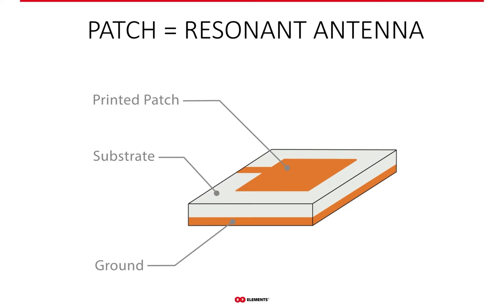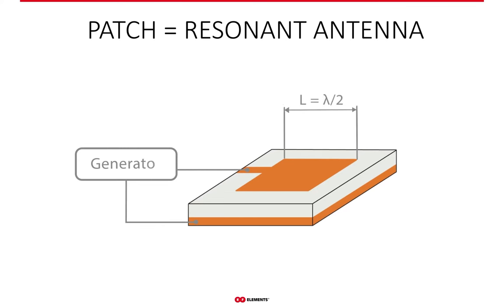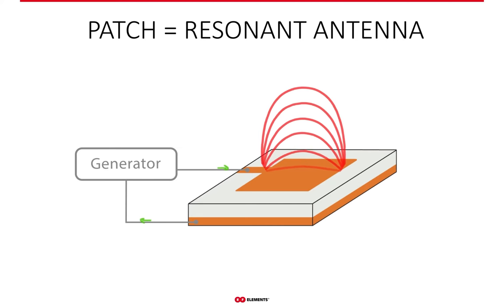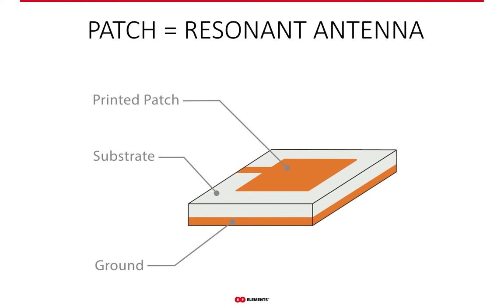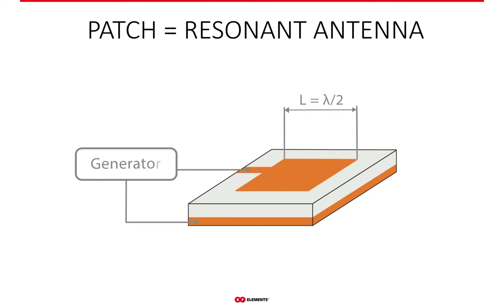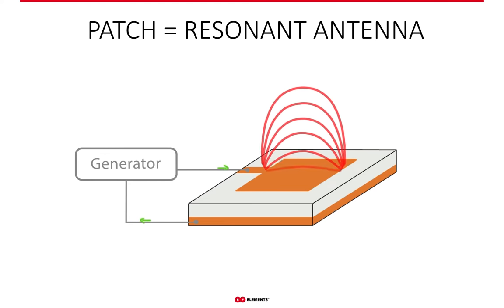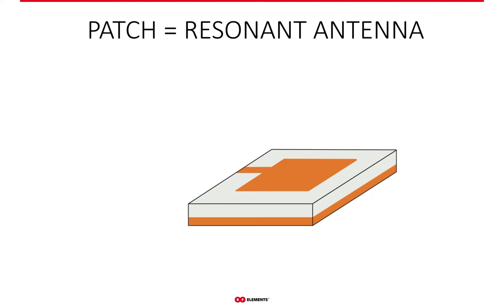A single patch etched on a PCB laminate is a resonant type of antenna. The resonance occurs when the length of the patch equals half the wavelength of the signal fed to it — where wavelength is the distance over which the feeding signal repeats its shape. When this condition is fulfilled, the antenna radiates the signal into free space.